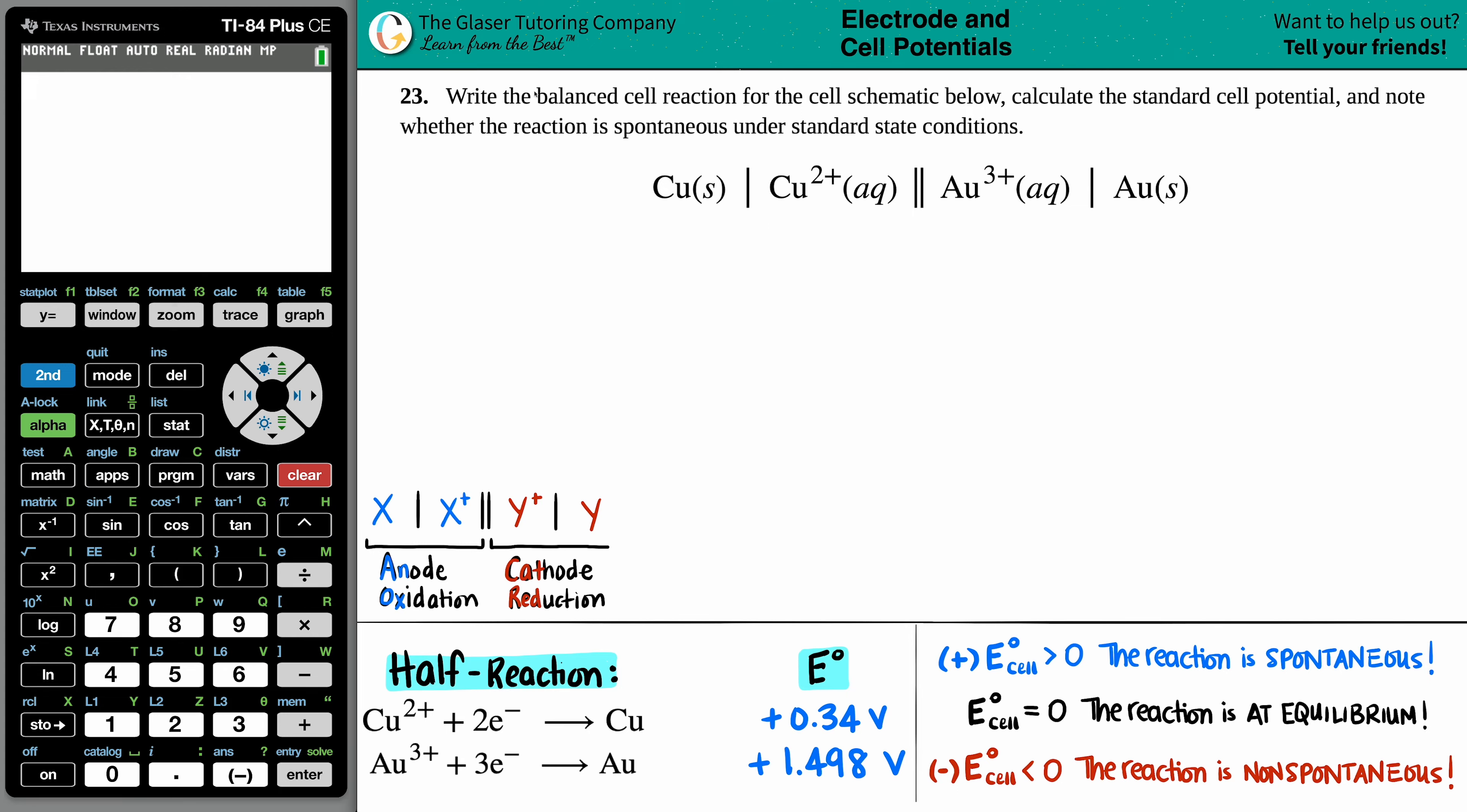Number 23. Write the balanced cell reaction for the cell schematic below. Calculate the standard cell potential and note whether the reaction is spontaneous under standard state conditions.